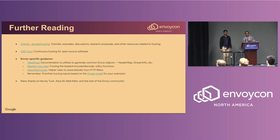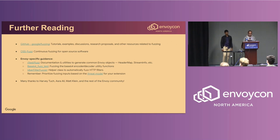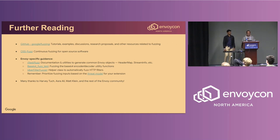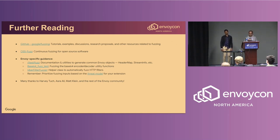Here are a few references to resources and guides on building and running fuzzers. First, there's the Google Fuzzing GitHub repo with tutorials and examples including performance tips. There's also the OSS Fuzz documentation, relevant to anyone who wants to fuzz their own repo or project. For Envoy-specific fuzzing, look at the test.fuzz directory in the Envoy repo. For a very simple non-proto-based fuzzer, the Base64 fuzz test is a good starting point. A more interesting example is the Uberfilter fuzzer, which is a generic HTTP filter fuzzer.